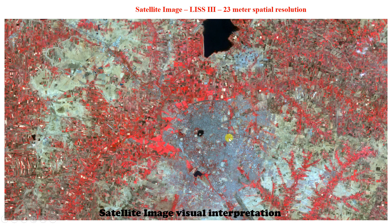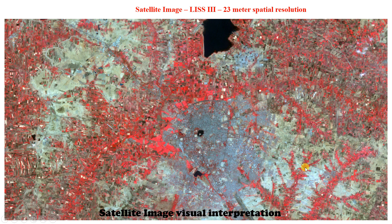If we see this bluish color, it represents the built-up area. The black color represents deep water, and the patches of blue color represent shallow water. The whitish-green color represents the barren land of that particular area. The linear features represent the transportation network.